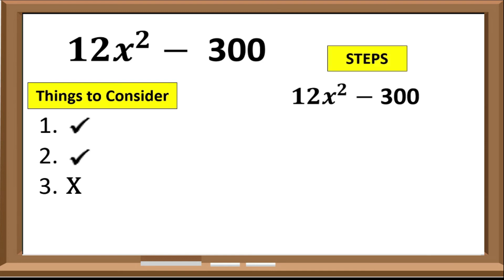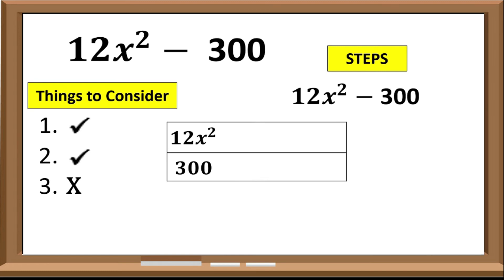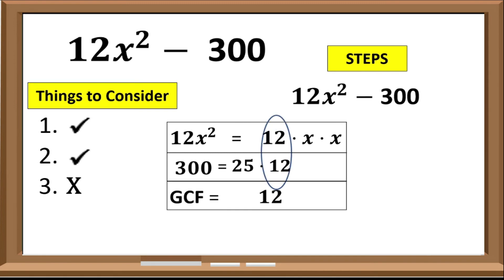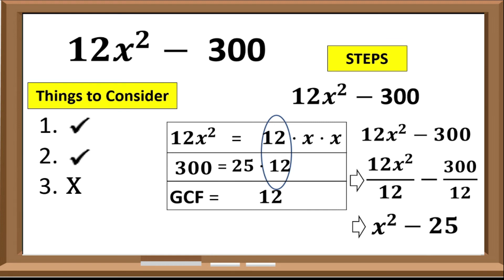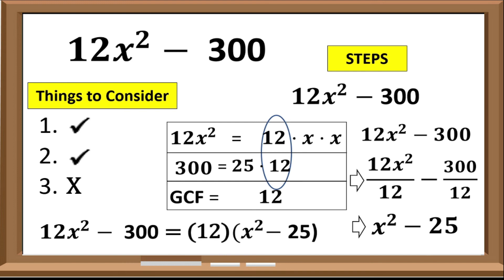Step 1: find the GCF of each term. For the first term 12x², we have 12 × x × x. For the second term 300, we have 12 × 25. The common factor is 12, so the GCF is 12. Step 2: divide each term by the GCF. 12x² ÷ 12 = x², and −300 ÷ 12 = −25. Step 3: the factors are the GCF and the quotient, so the factors of 12x² − 300 are 12 and (x² − 25).